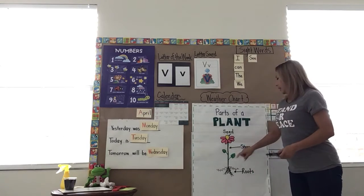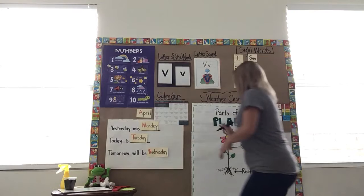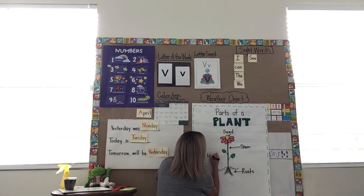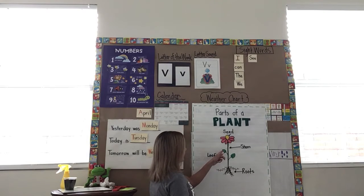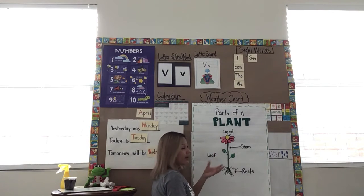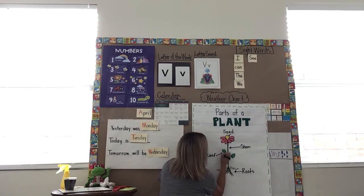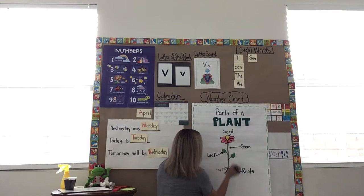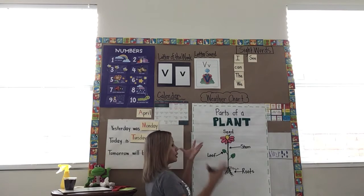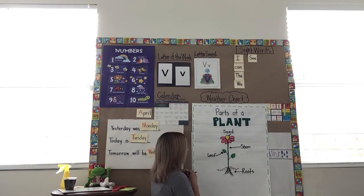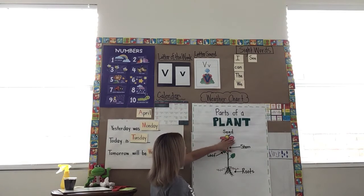Then we have the leaves. The leaves play an important part in a plant because the leaves get the oxygen from the air and they get the sunlight. That's how they feed the plant — through the leaves. The leaves absorb the sunlight and the oxygen to help the plant make food and grow.